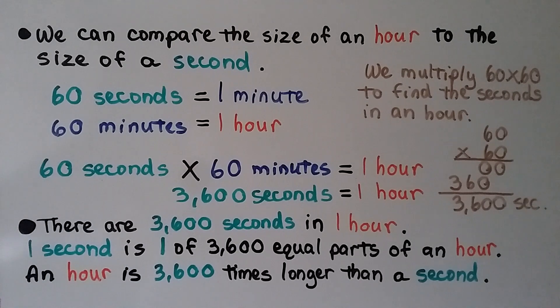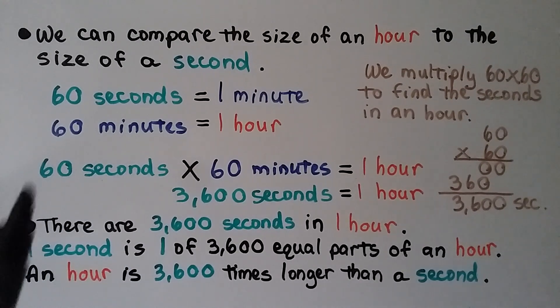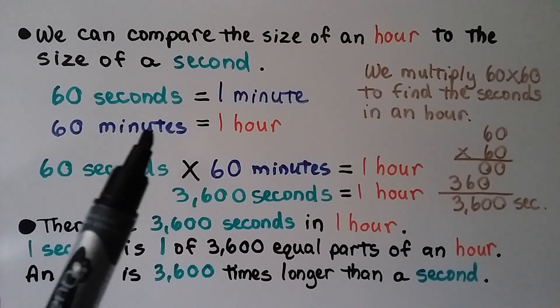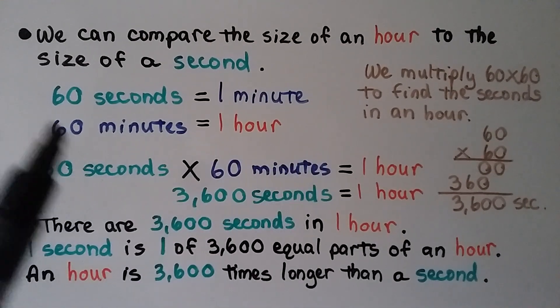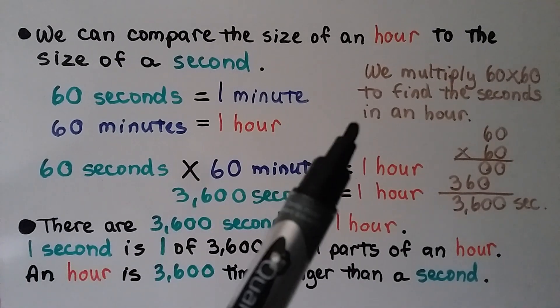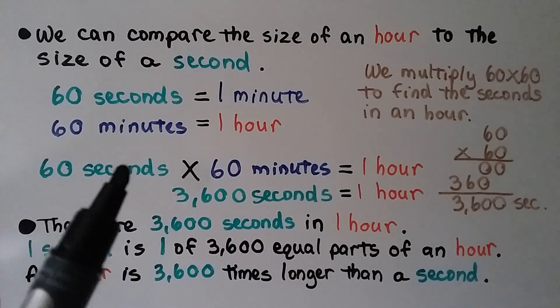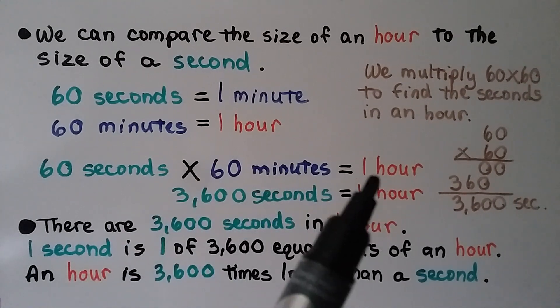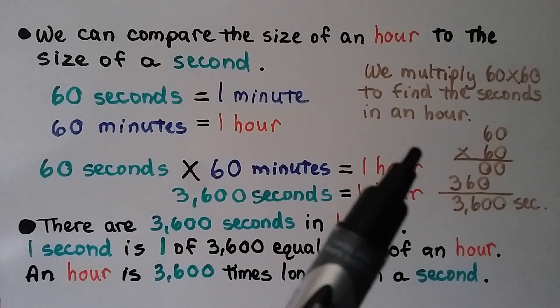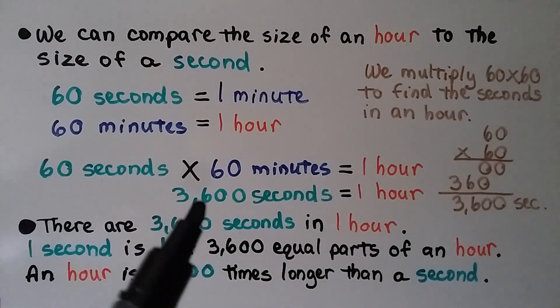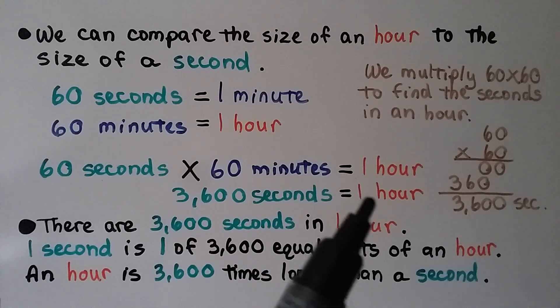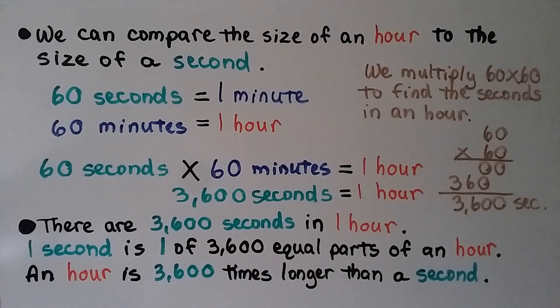We can compare the size of an hour to the size of a second. 60 seconds is equal to 1 minute and 60 minutes is equal to 1 hour. We multiply 60 times 60 to find the seconds in an hour. 60 seconds times 60 minutes is equal to 1 hour. We do 60 times 60 and we get 3,600 seconds is equal to 1 hour. So there are 3,600 seconds in 1 hour. One second is 1 of 3,600 equal parts of an hour. An hour is 3,600 times longer than a second.